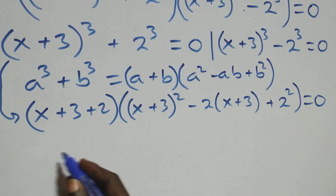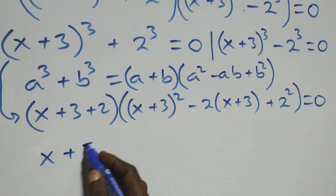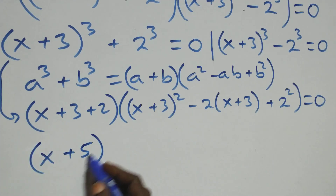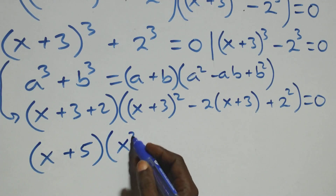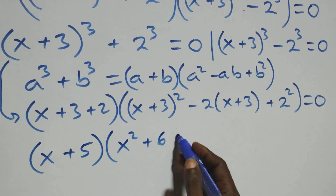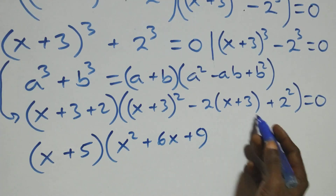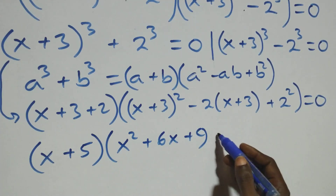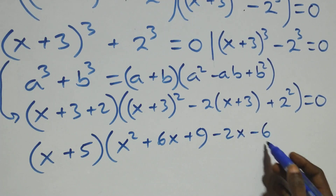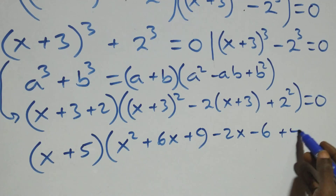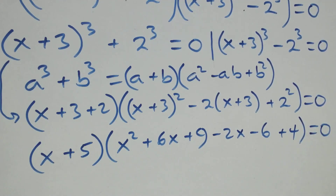Then here we have (x plus 5), into brackets, open brackets, expansion here gives us x squared plus 6x plus 9, and minus 2 times (x plus 3) that gives minus 2x minus 6, then plus 4, close bracket, equals to 0 here.